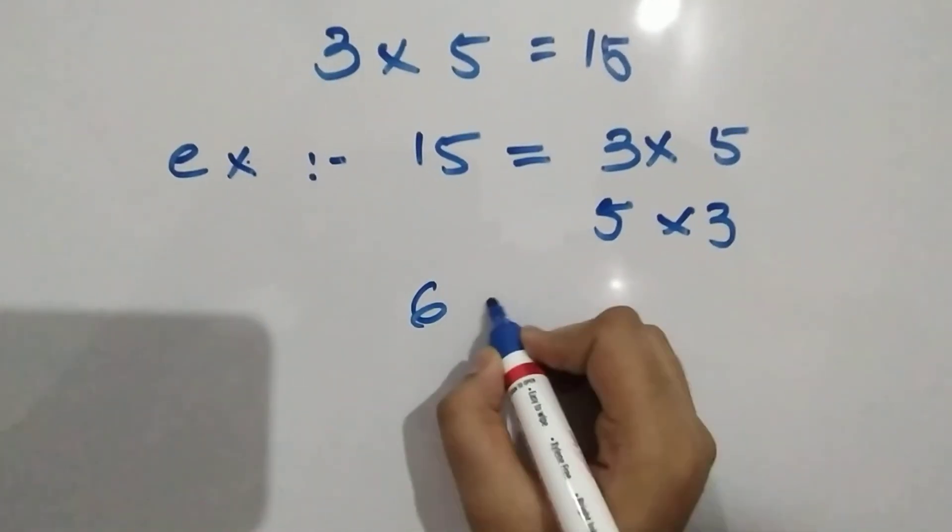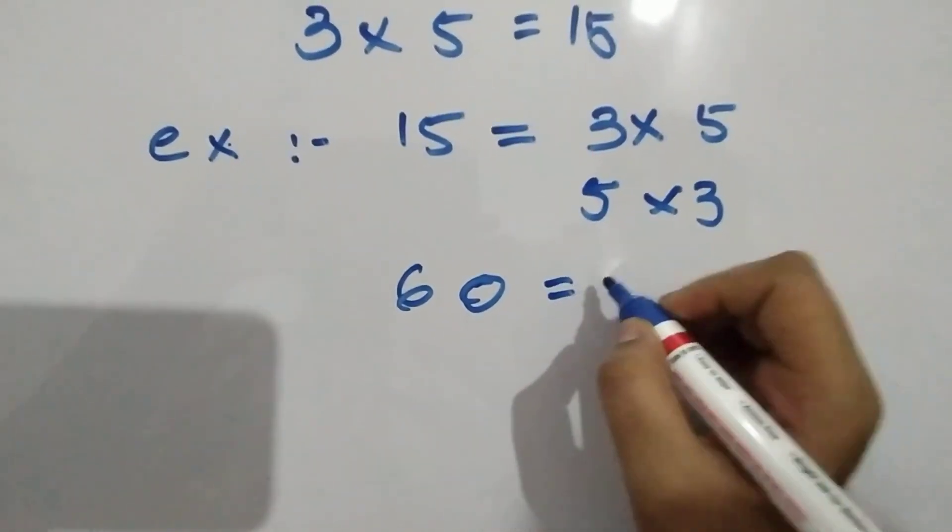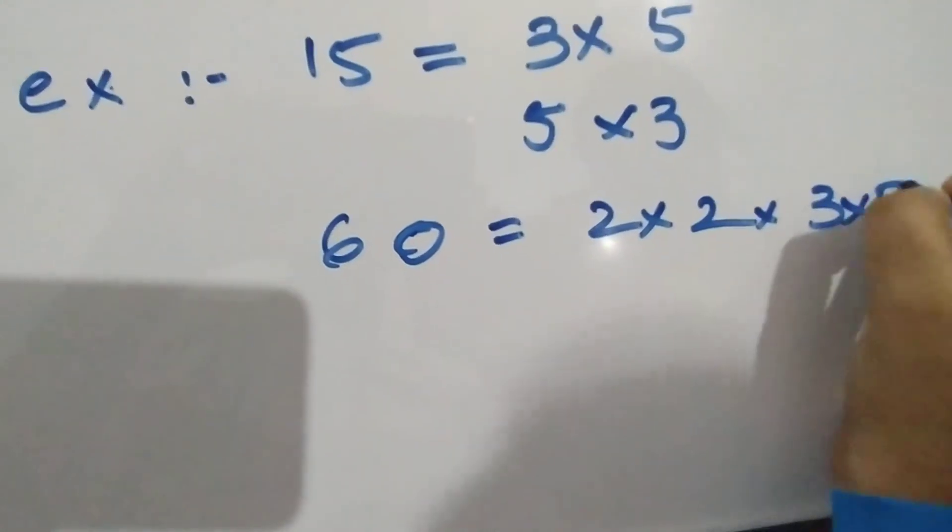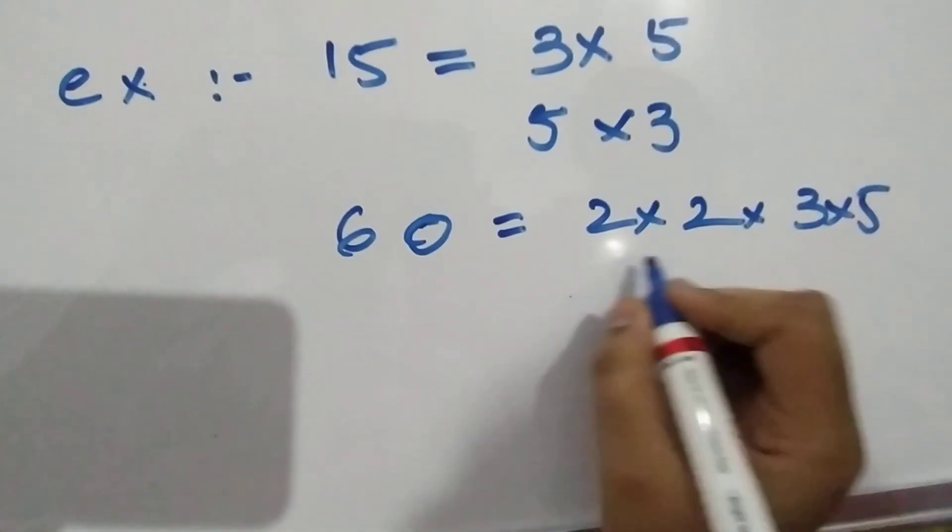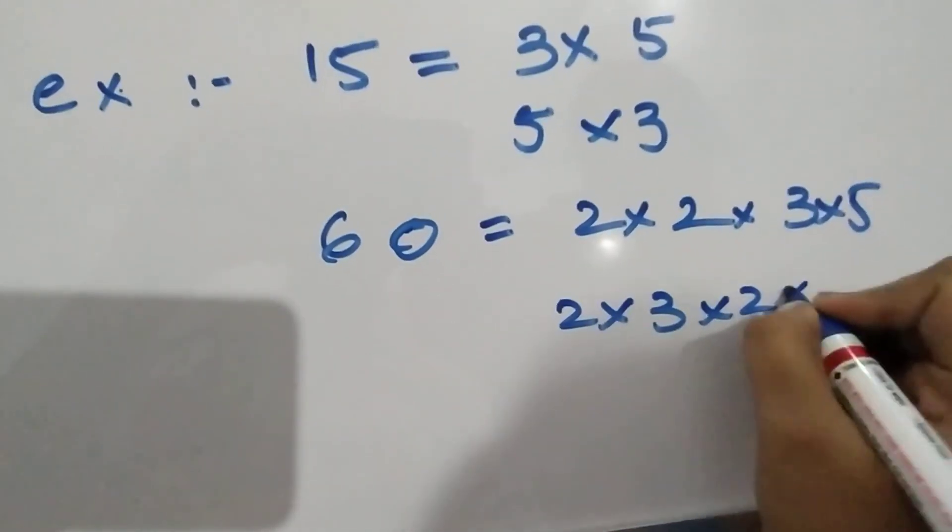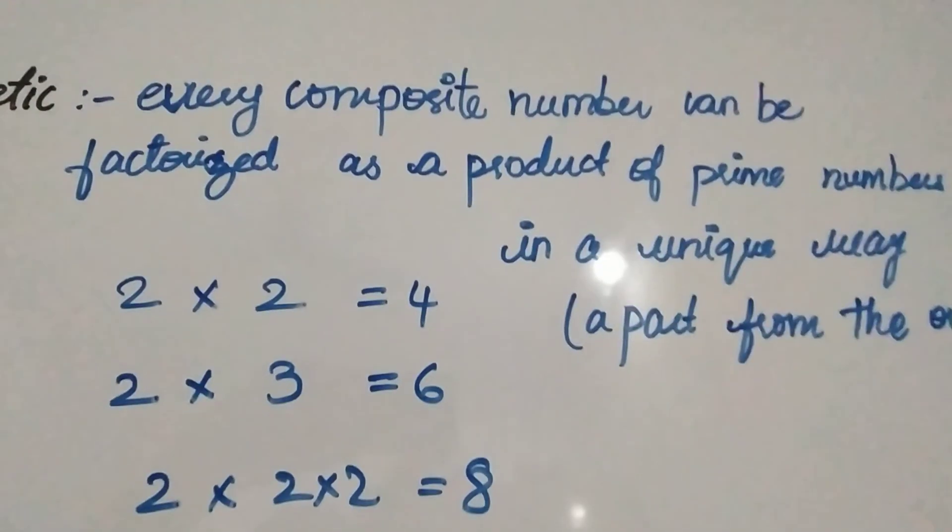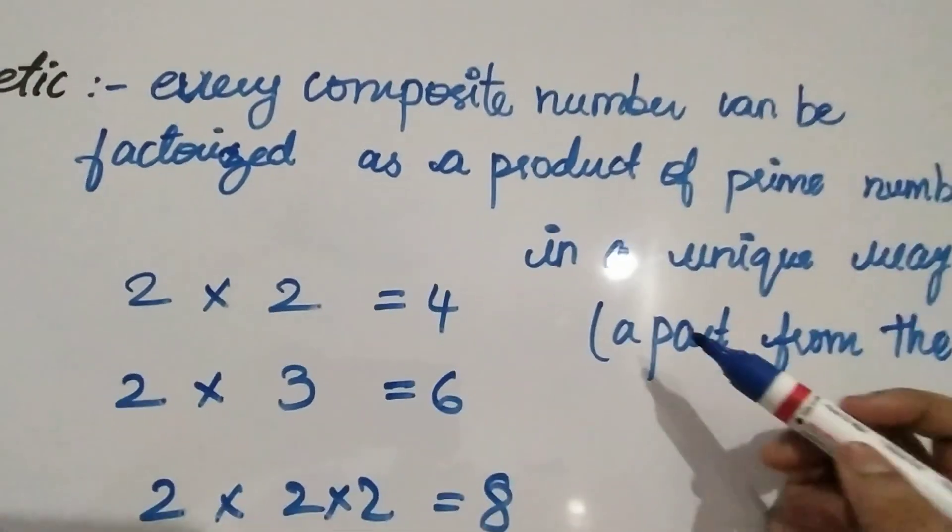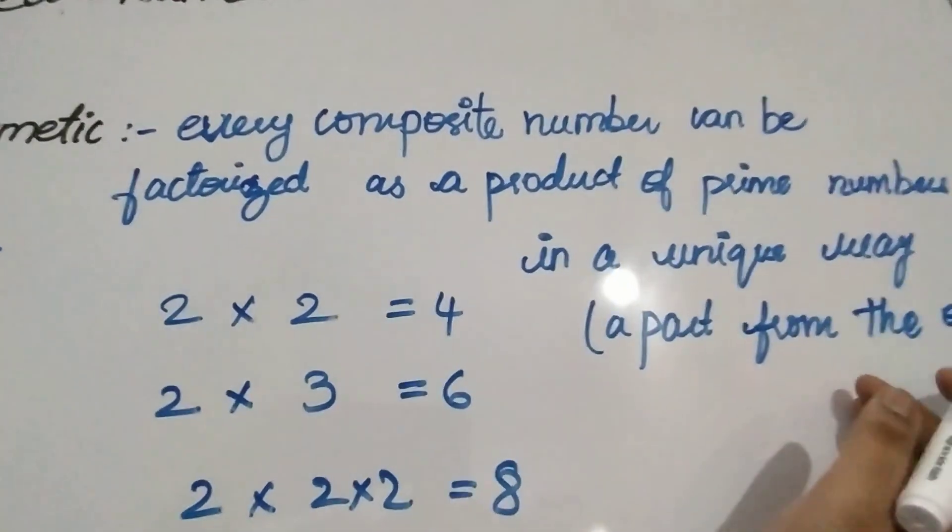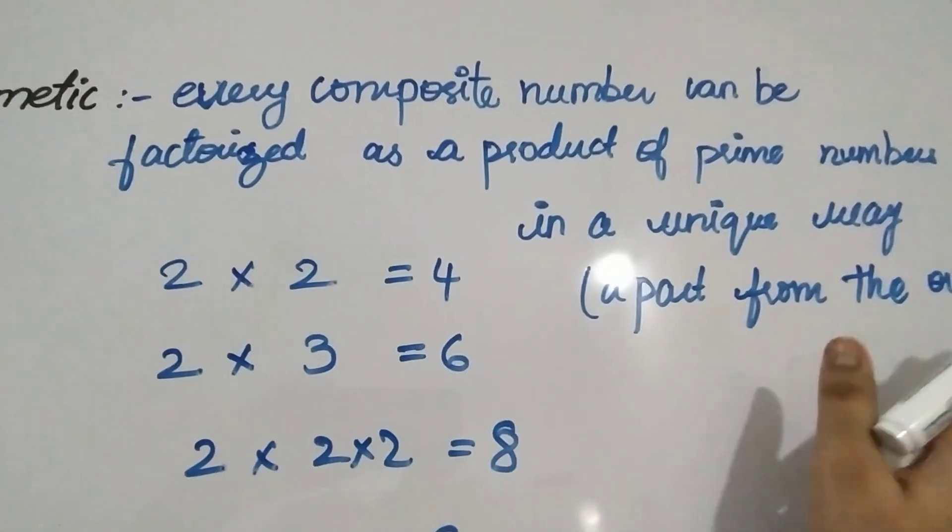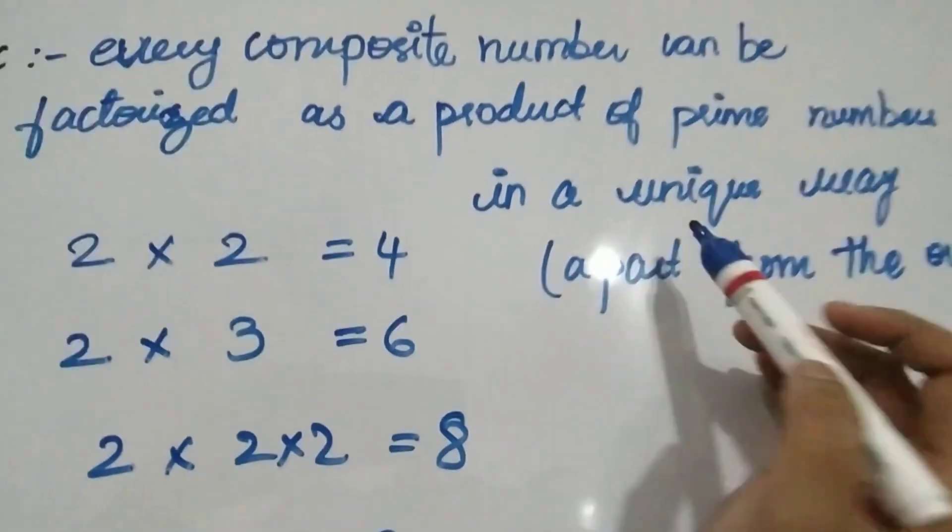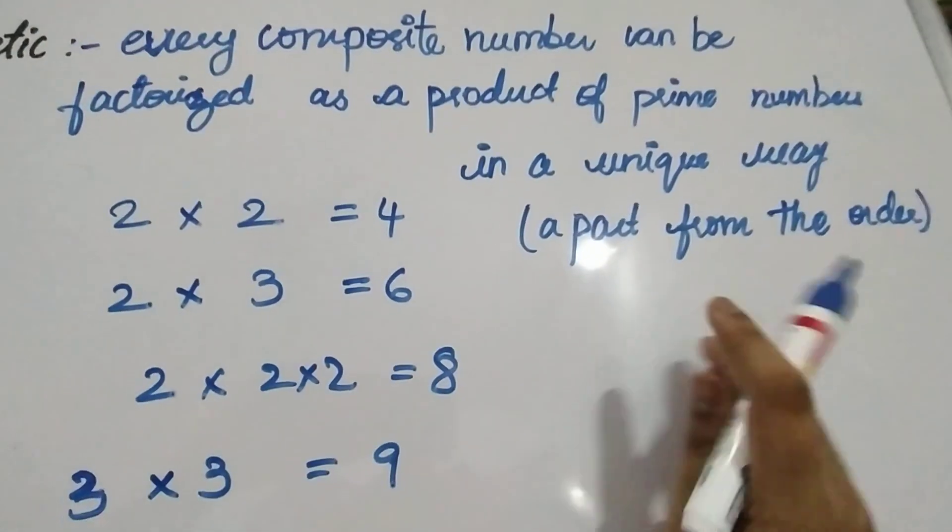Example 15 can be written as 3 into 5 and it can also be written as 5 into 3. The order doesn't matter.